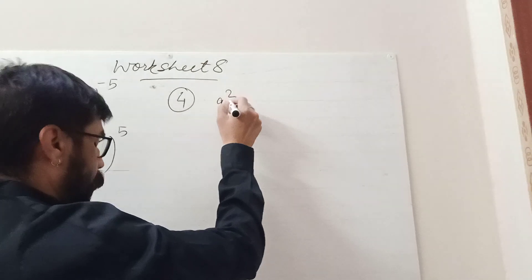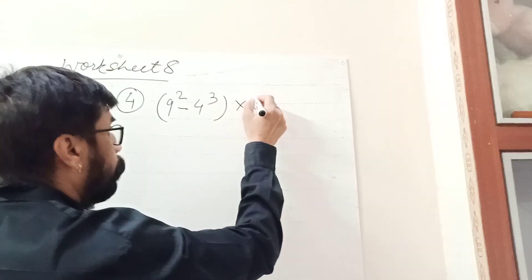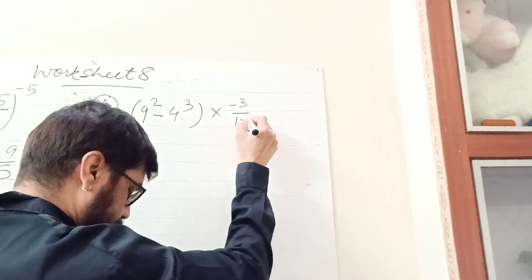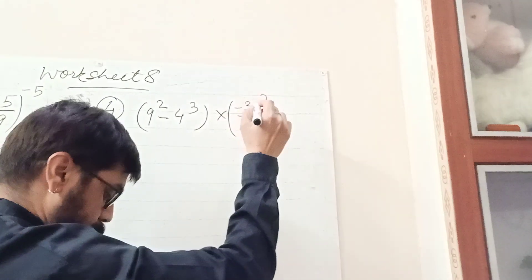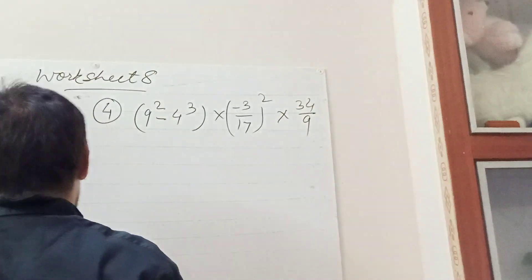(9^2 - 4^3) × (-3/17)^2 × 34/9. Now, see,